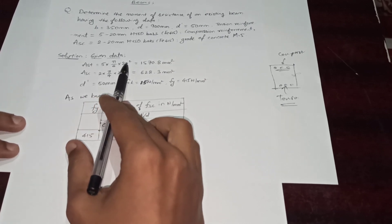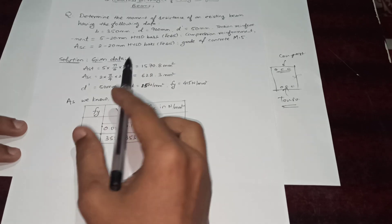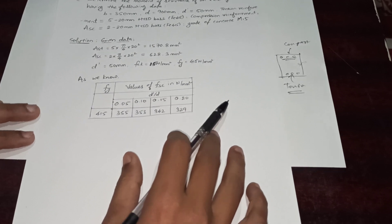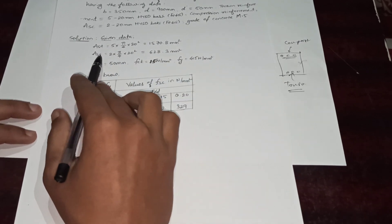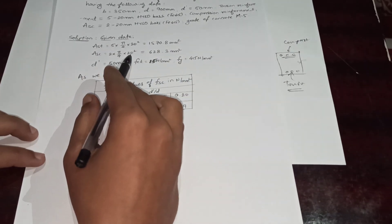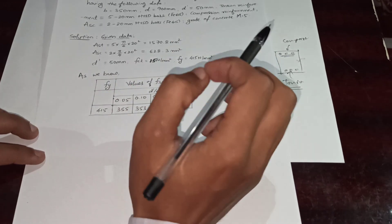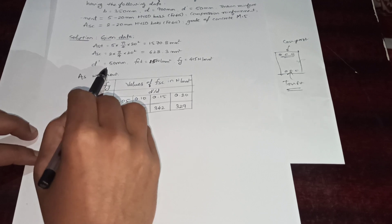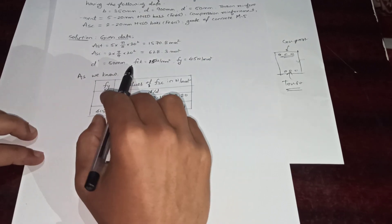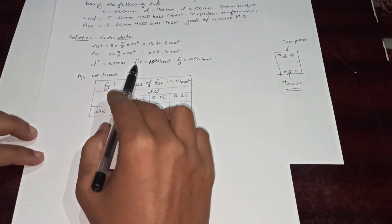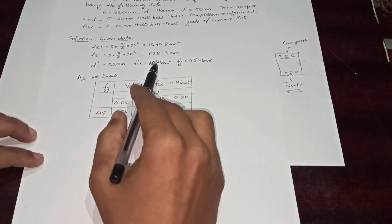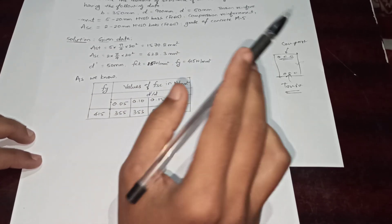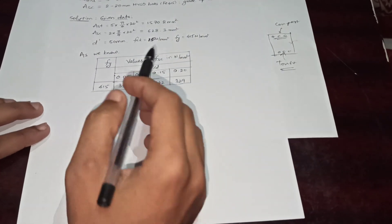We will summarize the given data. AST — total tensile reinforcement — is five times the area of one 20 mm bar, giving 1570.8 mm². Area of compression reinforcement ASC — two bars of 20 mm dia — gives 628.3 mm². Effective cover d' = 50 mm. Material grades: fck = 15 N/mm² and fy = 415 N/mm².